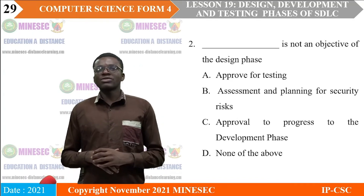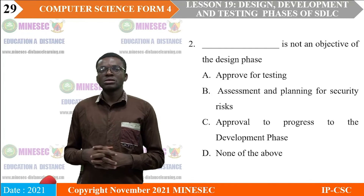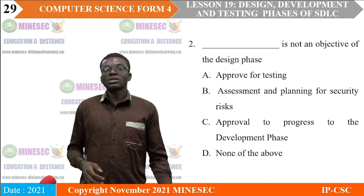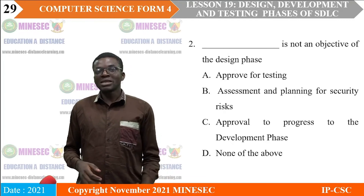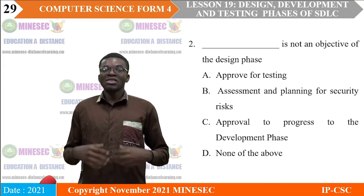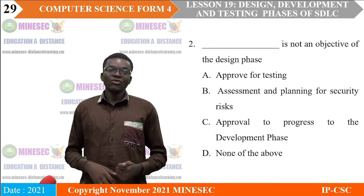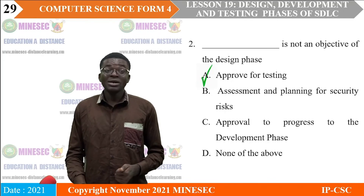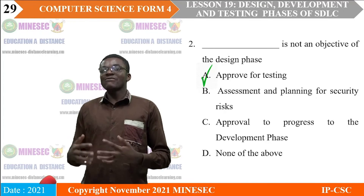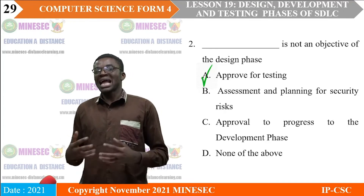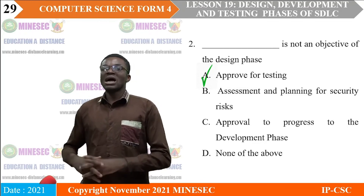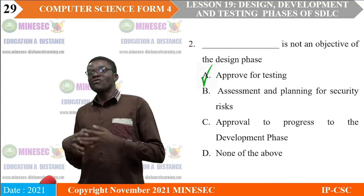Which of the following is NOT an objective of the design phase? A. Approve for testing, B. Assessment and planning for security risk, C. Approve to progress to the development phase, D. None of the above. The correct answer is A — approve for testing — because after the design phase, we move to the development phase, not directly to testing.